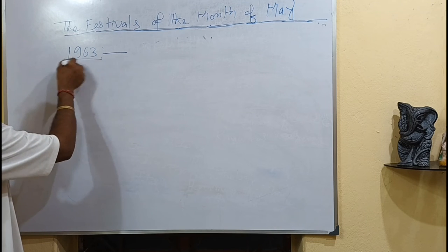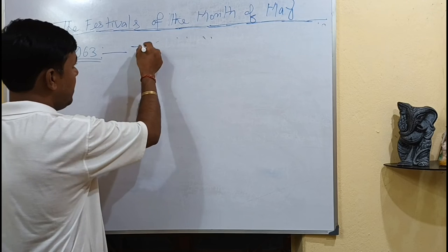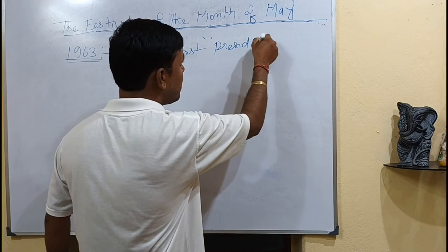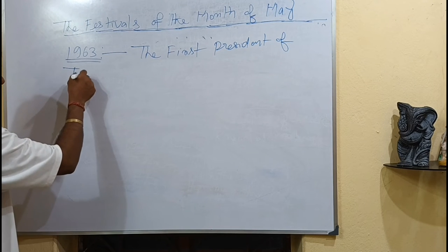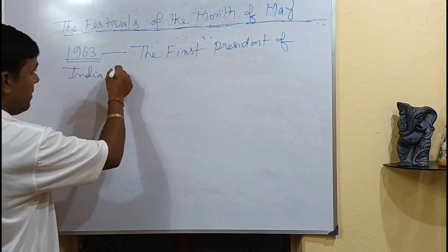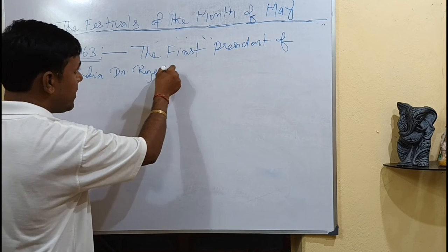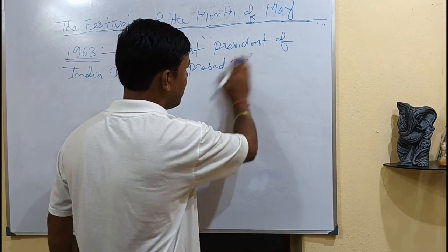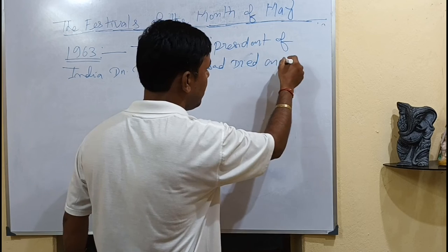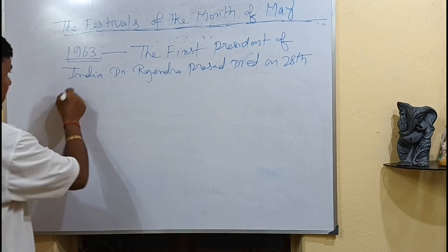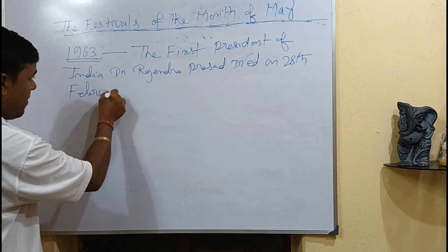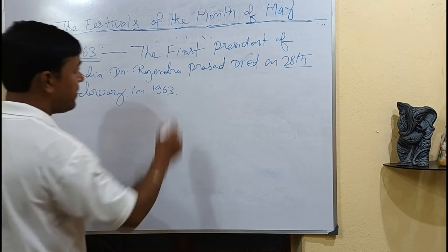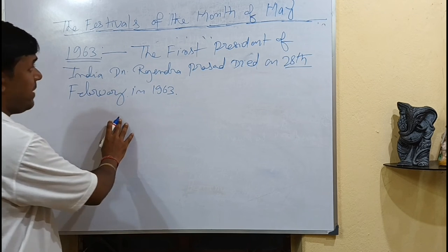The next event of 1963: Dr. Rajendra Prasad, the first President of India, died on 28th February 1963.